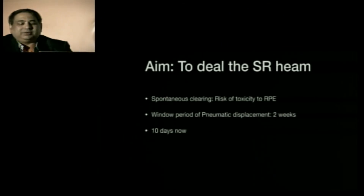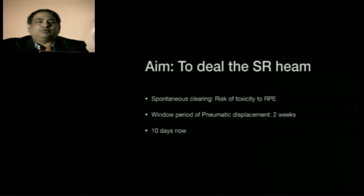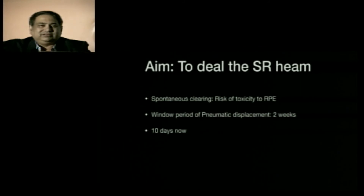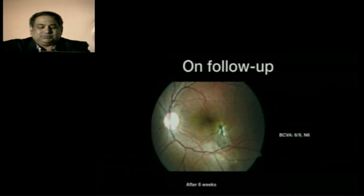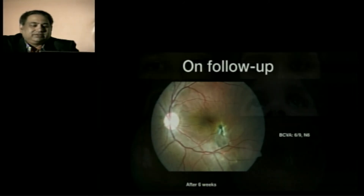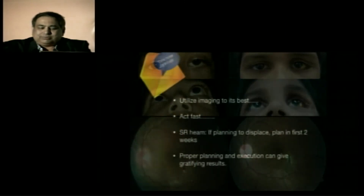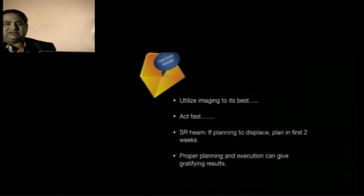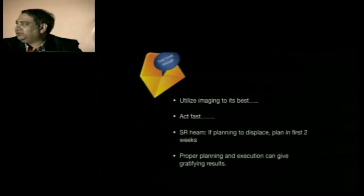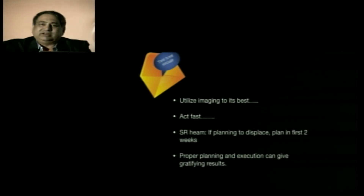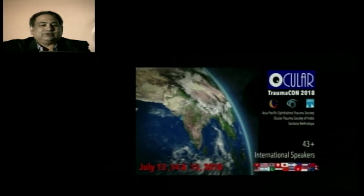The next step was deciding whether to wait for spontaneous clearing of the sub-retinal hemorrhage or to act. The window for pneumatic displacement is two weeks, and we didn't want this child to develop amblyopia, so we wanted to clear it as early as possible. The child had very good pre-op vision. On day 10, intravitreal 100% SF6 gas was injected. At follow-up there were some folds but vision was good. The key message: utilize imaging to its best, avoid unnecessary laser over hemorrhage, act fast for sub-retinal hemorrhage displacement within the first two weeks — proper planning and execution can give very gratifying results in pediatric trauma.